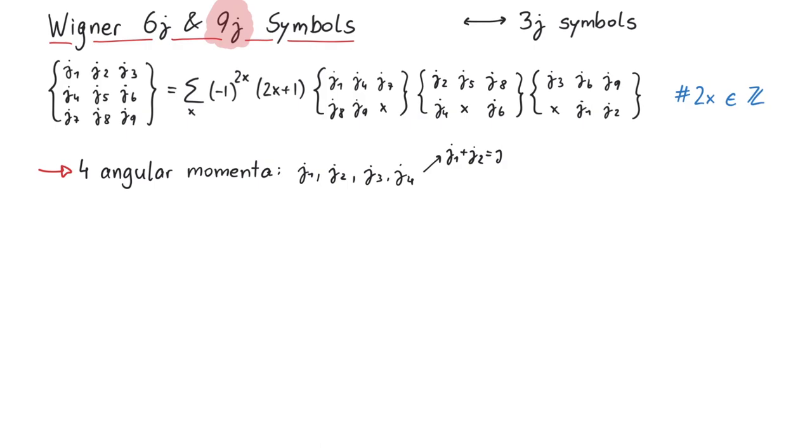You could either first couple j1 and j2, and also j3 with j4. And after that, j12 with j34. Or, you could first couple j1 with j3, and j2 with j4. Again, both ways will lead to complete sets of basis vectors. So again, there must be a unitary transformation to switch between them.